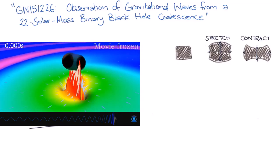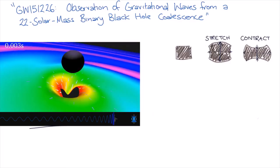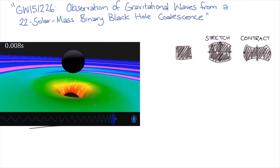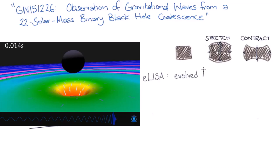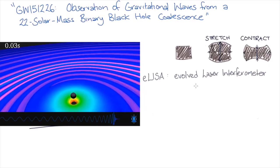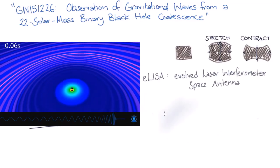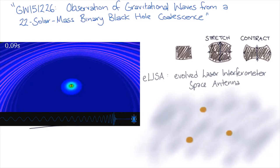In the future, we can build bigger and better detectors, including by improving the advanced LIGO detectors and by building detectors such as ELISA in space. These detectors can give us information about our universe that is impossible to get from other sources.